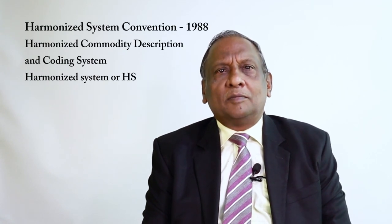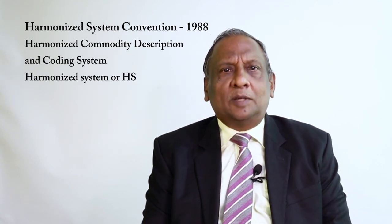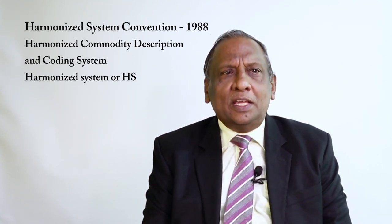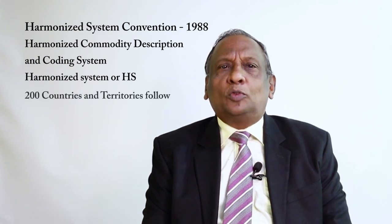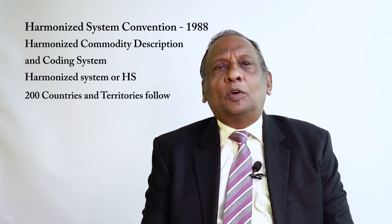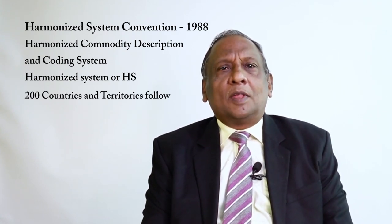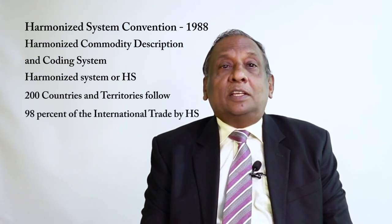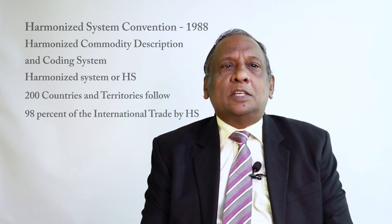To have a common system all over the world, the World Customs Organization — the parental body of customs administration — sponsored an international convention called the Harmonized System Convention. This brought the Harmonized Commodity Description and Coding System, or Harmonized System, or simply HS. Now more than 200 countries and territories all over the world follow the Harmonized System, and 98% of the world trade is now conducted with HS codes.